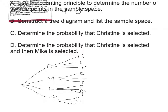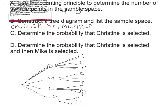So the sample space going up the diagram would be: Christine-Mike, Christine-Larry, Christine-Phyllis, Mike-Christine, Mike-Larry, Mike-Phyllis, Larry-Christine, Larry-Mike, Larry-Phyllis, Phyllis-Christine, Phyllis-Mike, Phyllis-Larry. That's the sample space. Now we can use it to create probabilities — keep in mind there are 12 possibilities.